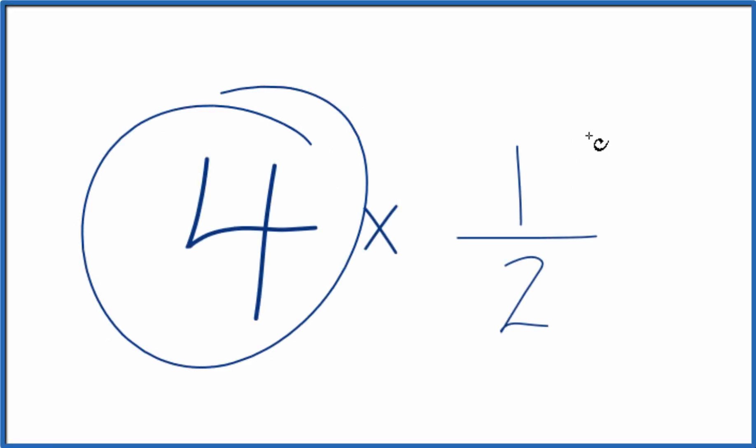Let's multiply four times 1 half. Here's how you can do it. First off, you could just think of it as four 1 halves.